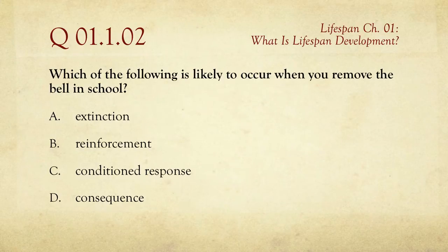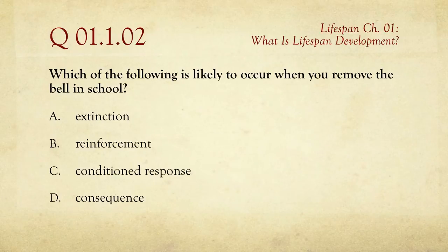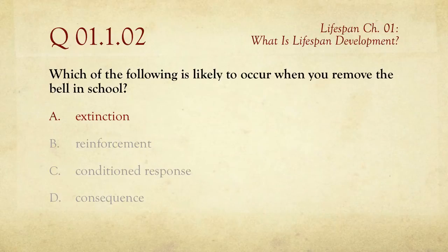Three of these are legitimate psychological terms. D, consequence, doesn't count — that's not what we talk about in conditioning research, classical or operant. The answer is A, extinction. You're extinguishing the association between the bell and class letting out. There's no longer a pairing between them.